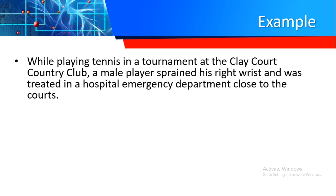Let's start with the first guideline. I have an example here. While playing tennis in a tournament at the Clay Court Country Club, a male player sprained his right wrist and was treated in a hospital emergency department close to the courts. Chapter 19 covers injuries like traumatic or accident injuries. The problem here is the patient suffered a sprain in his right wrist, so your code should be a sprain of the right wrist.